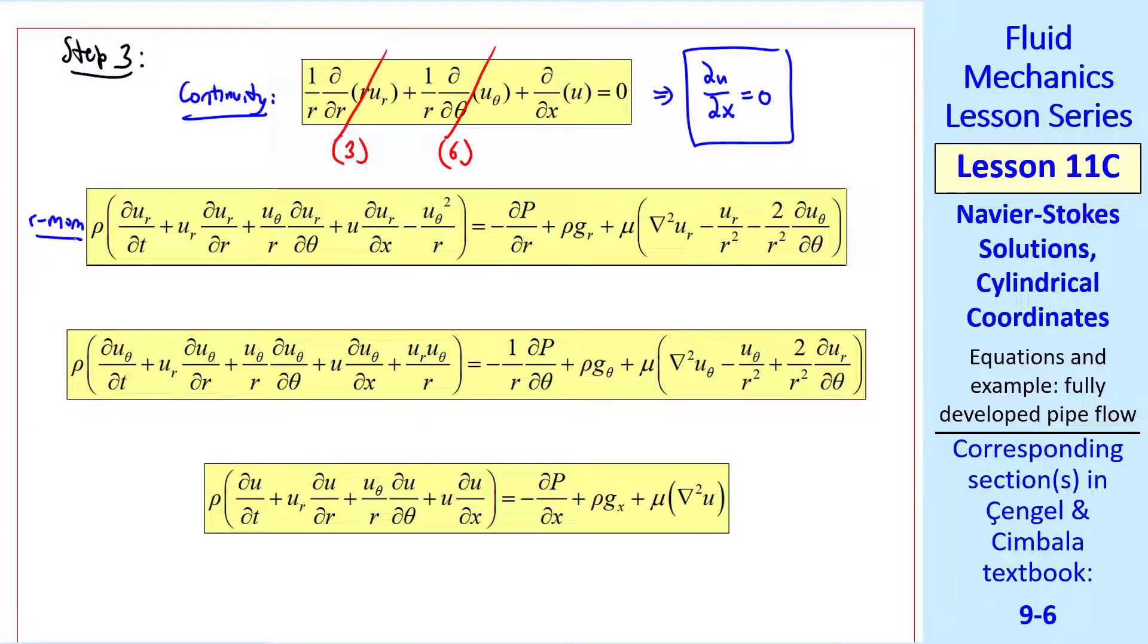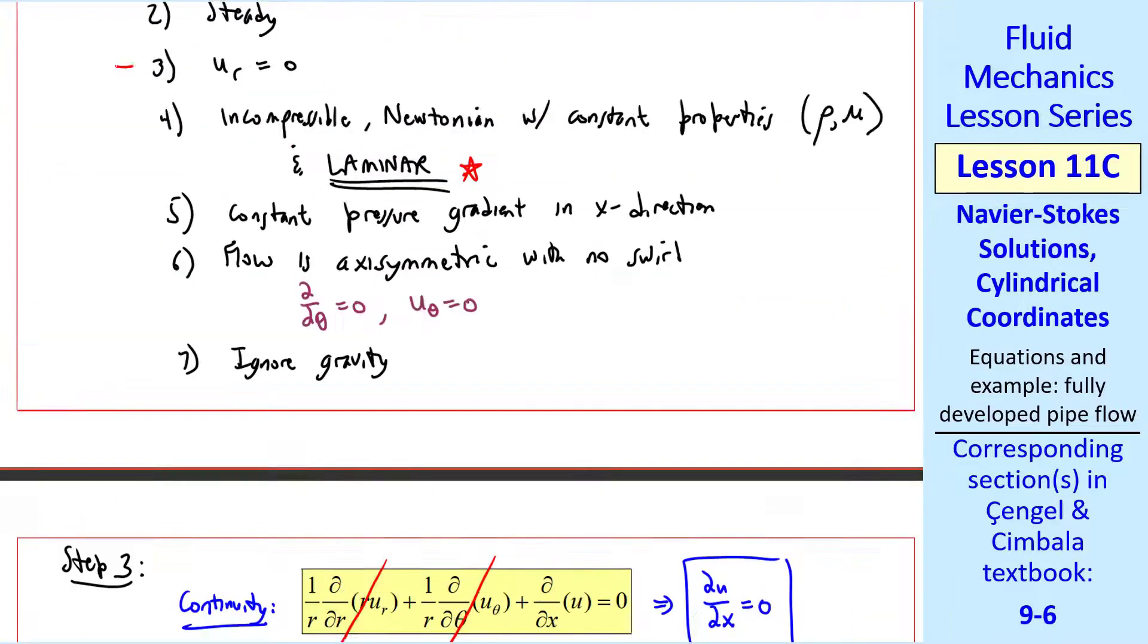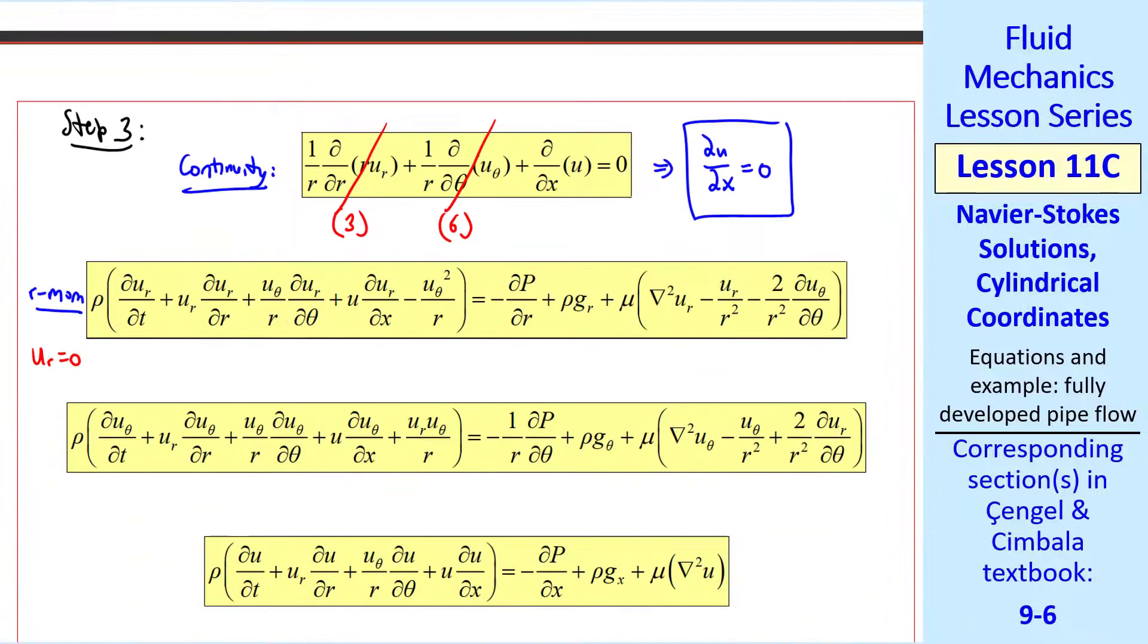The r momentum equation is treated next. We know that ur is zero by assumption three. So everywhere there's a ur, it goes away. Again, six tells us that uθ is zero. We're ignoring gravity. ur is zero by three. And if uθ is zero by assumption six, then ∂uθ/∂θ is also zero. In fact, ∂/∂θ of anything is zero.